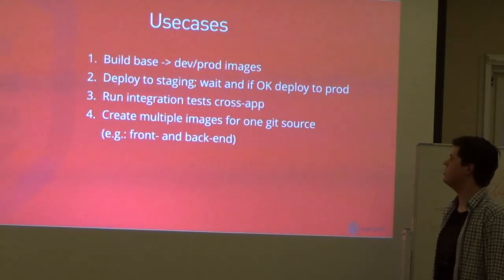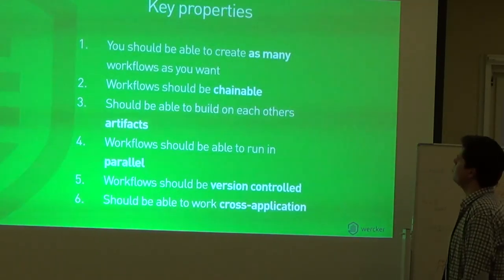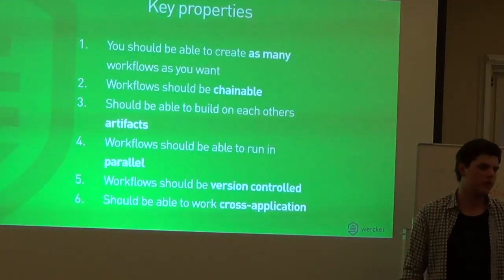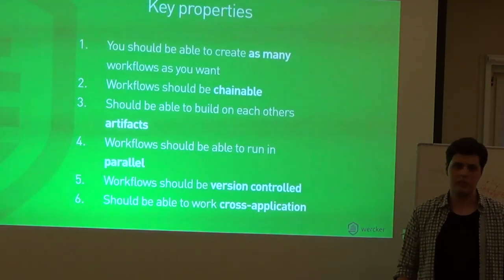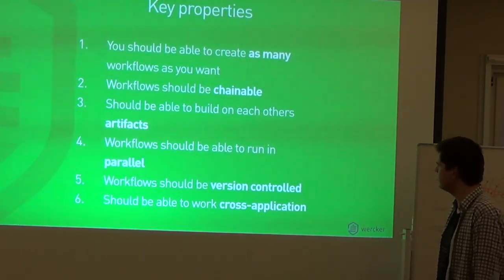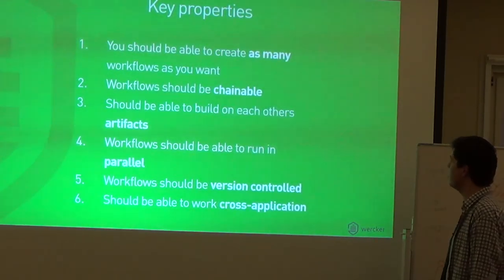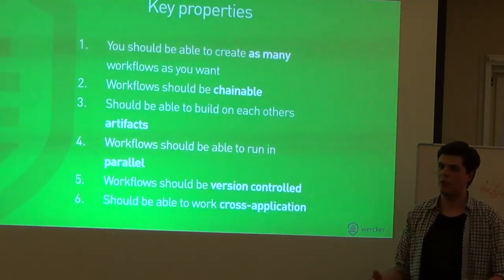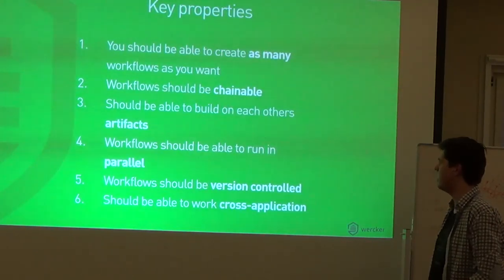Based on these four use cases, we came up with a list of key properties. First: you should be able to create as many workflows as you want - build prod, build staging, build QA, not just 'build'. Second: workflows should be chainable. Your build base image should be able to trigger build dev, and build dev should be able to trigger deploy dev or push dev - in the spirit of build pipelines triggering deploy pipelines. Third: workflows should be able to build on each other's artifacts. Every pipeline produces an artifact - what if I want to take that artifact and build upon it in the next pipeline?